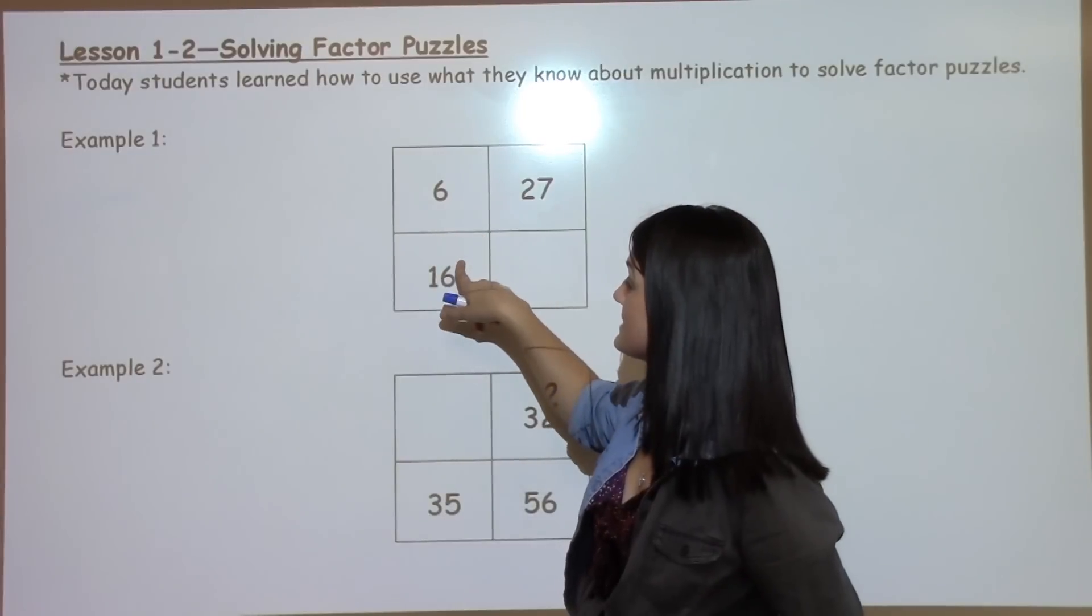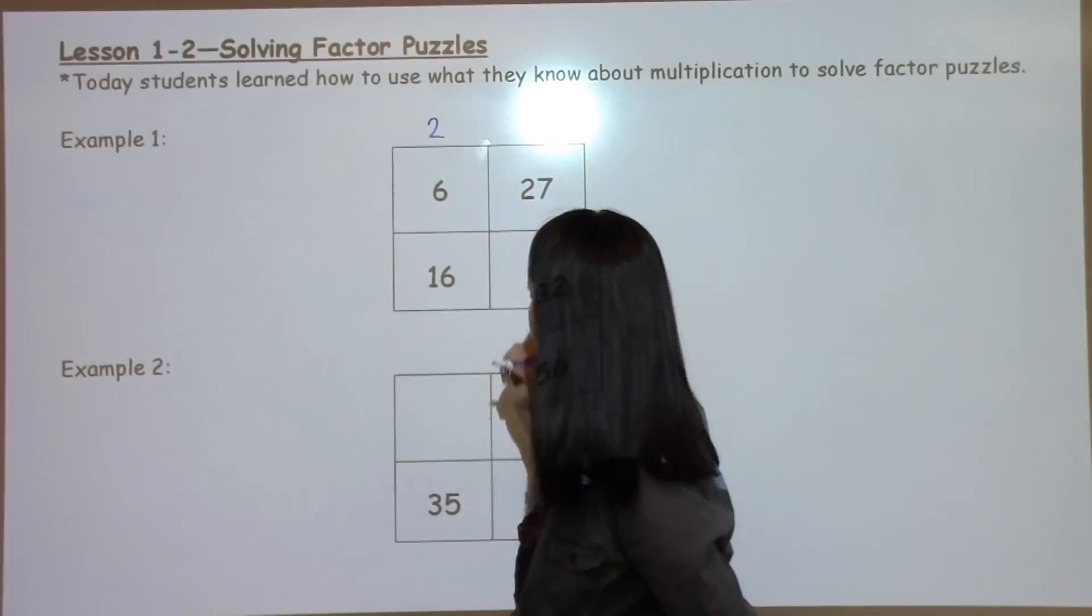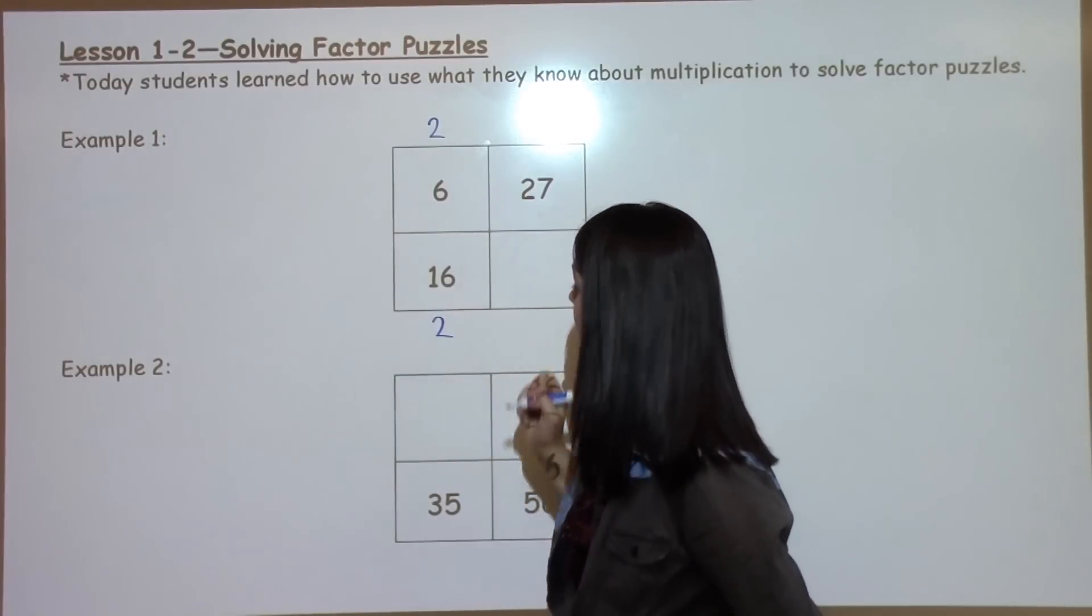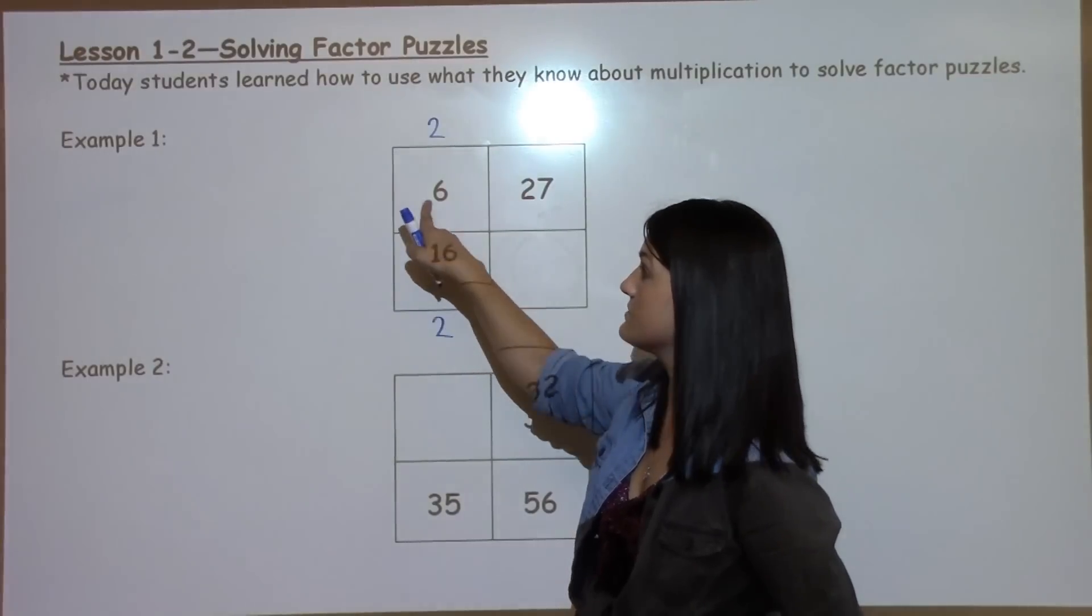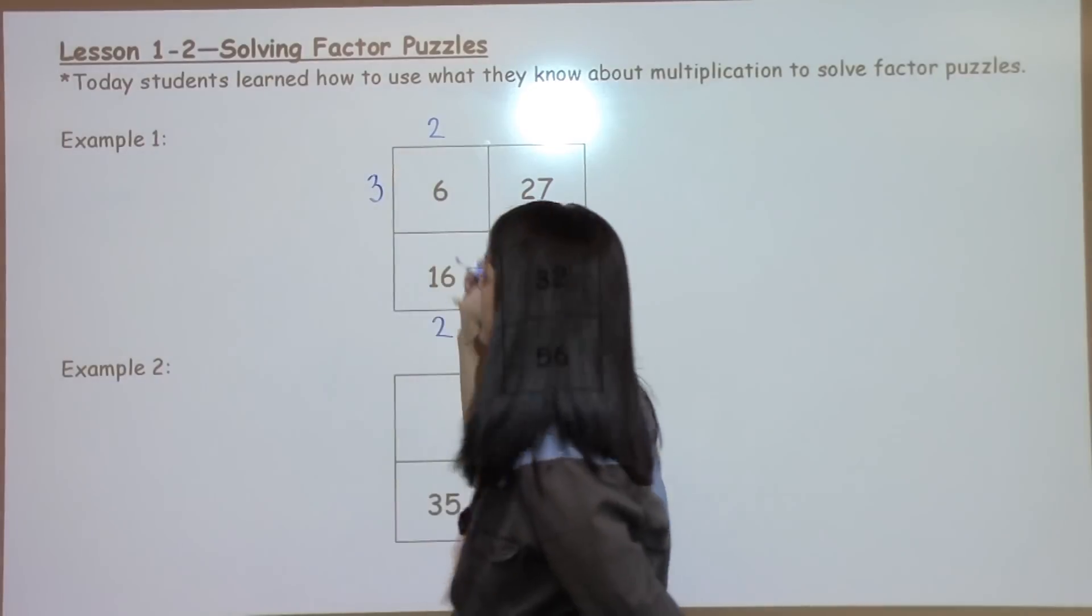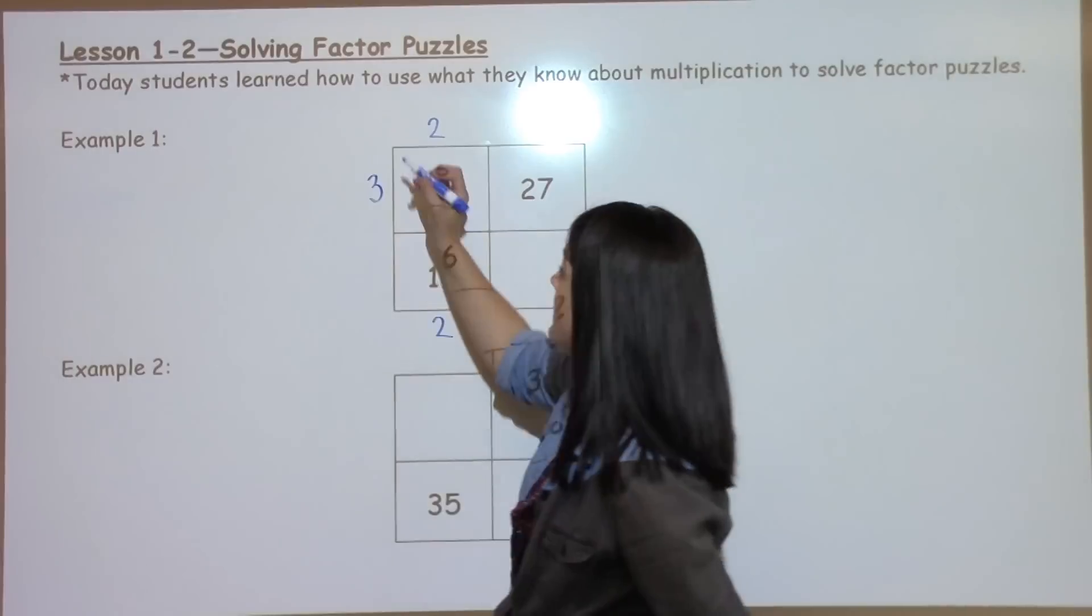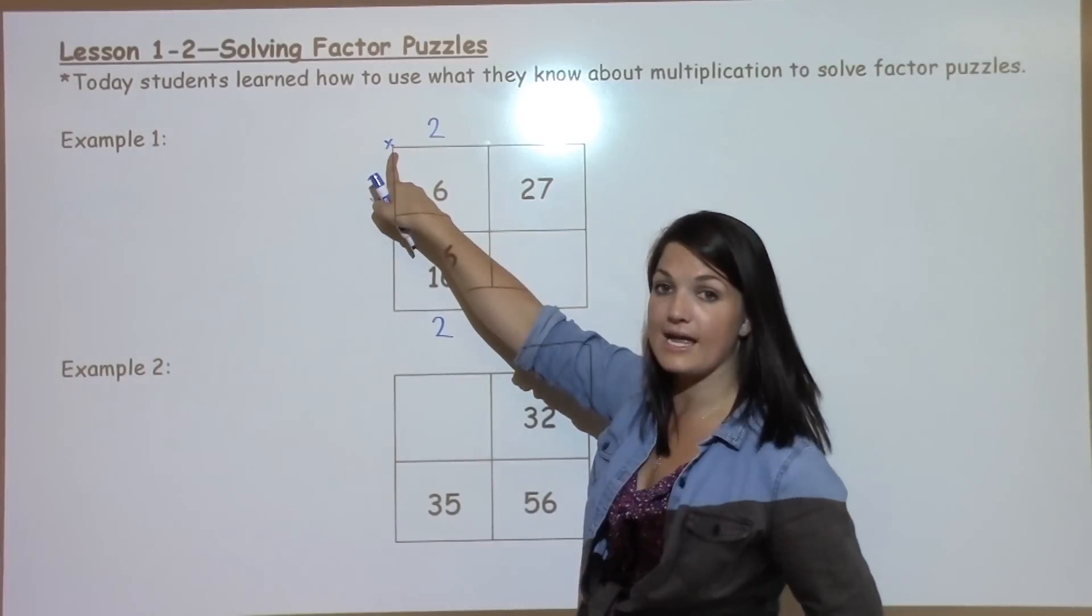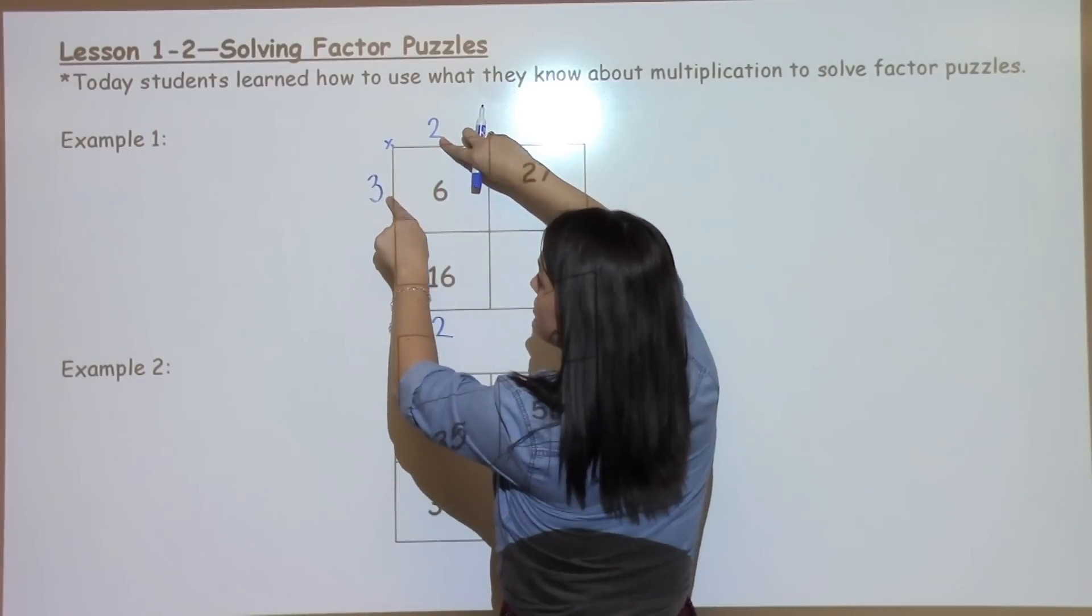I am thinking that 6 and 16 have a 2 in common. So I'm going to put a 2 up top there and a 2 down below. 2 times what gives me 6? 2, 4, 6. 2 times 3 gives me 6. So just like in our multiplication tables, I'm pretending like there's a little times right there and I'm meeting in the middle. 3 times 2 is 6.